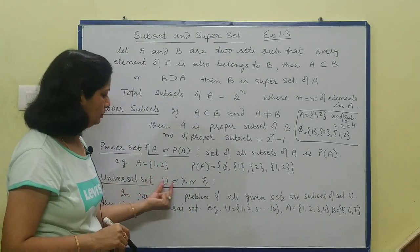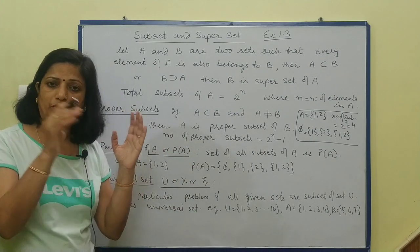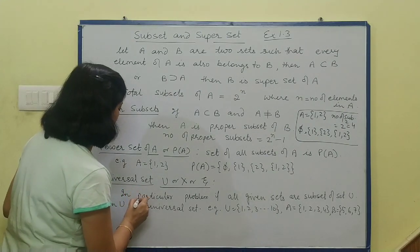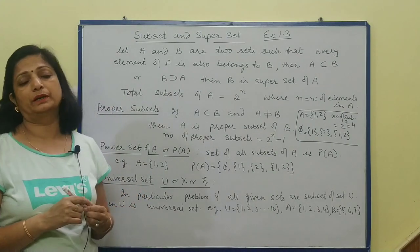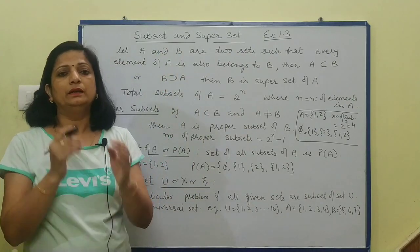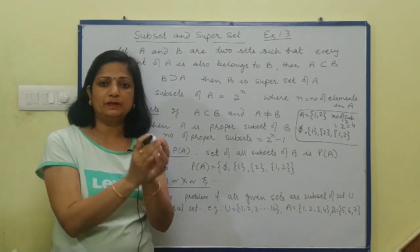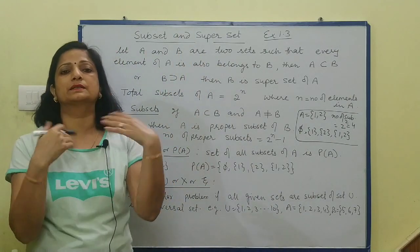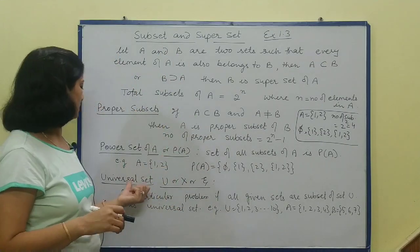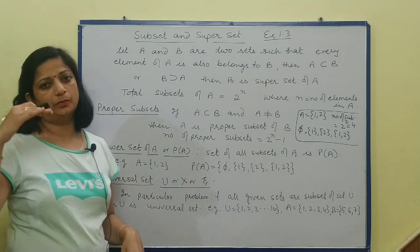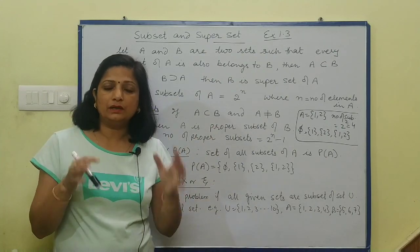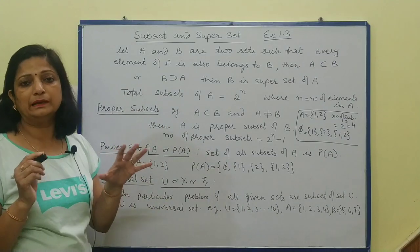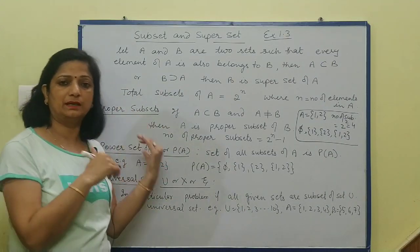Universal set — U, capital X, और Z — ये तीनों notation universal को show करते हैं in a particular problem. Universal नाम से ही आपको लग रहा है — universe से बना है — यानि किसी भी particular problem में जितने sets given हैं वो सब किसी एक larger set के subset हैं। उस larger set को हम universal set नाम देते हैं — ये problem to problem differ कर सकता है।